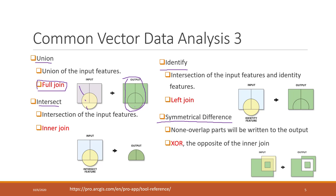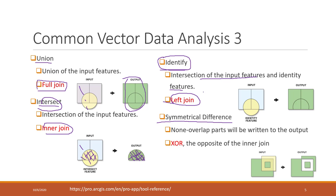Intersect is like an inner join in SQL — if we intersect one feature with another, only the overlapped part will be kept. That is very useful in some cases. Identify is more like a left join: the intersection of the input feature and the identify feature will be kept, plus the entire input feature. So for example, if the input feature is a box and we identify against a circle, only the intersected part plus the input feature will be kept.